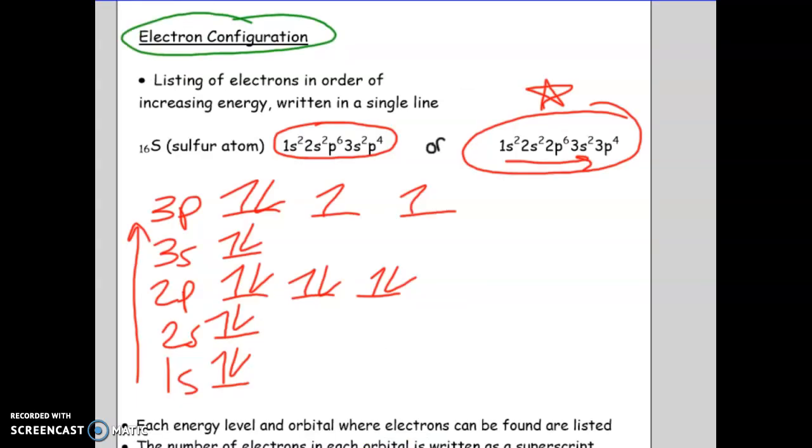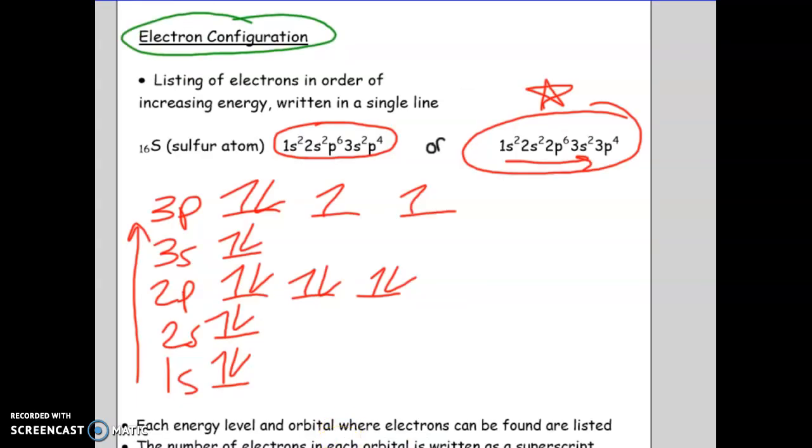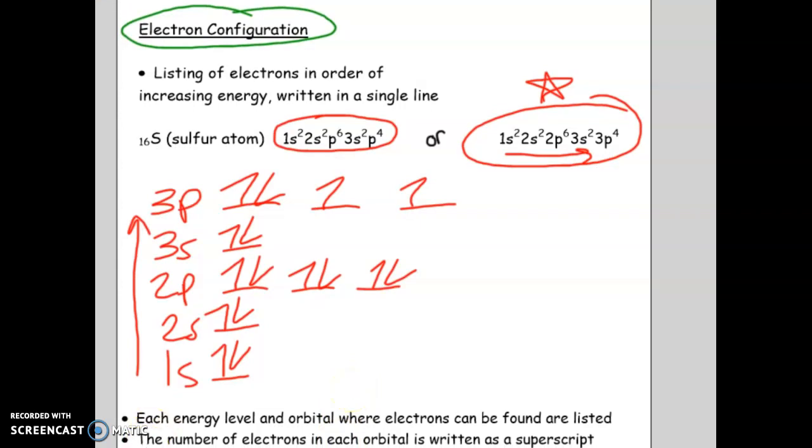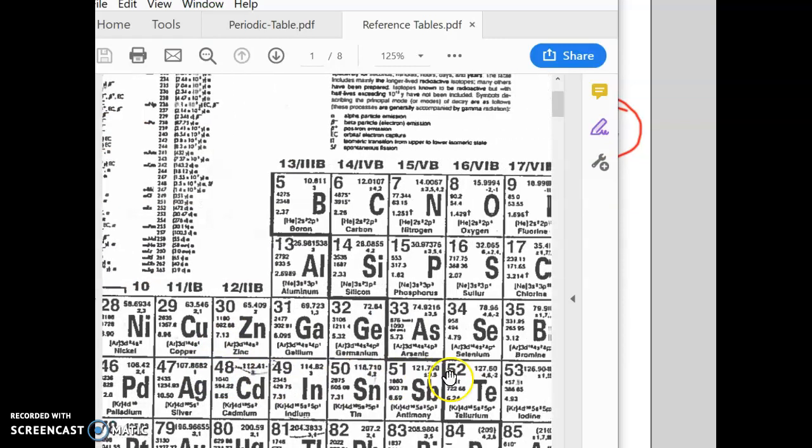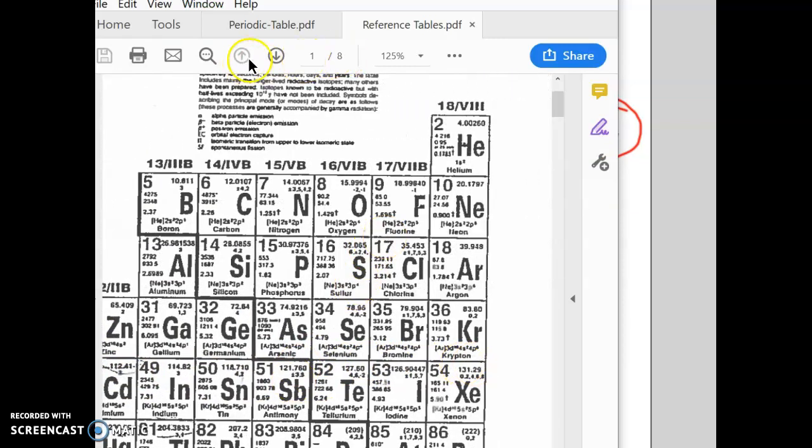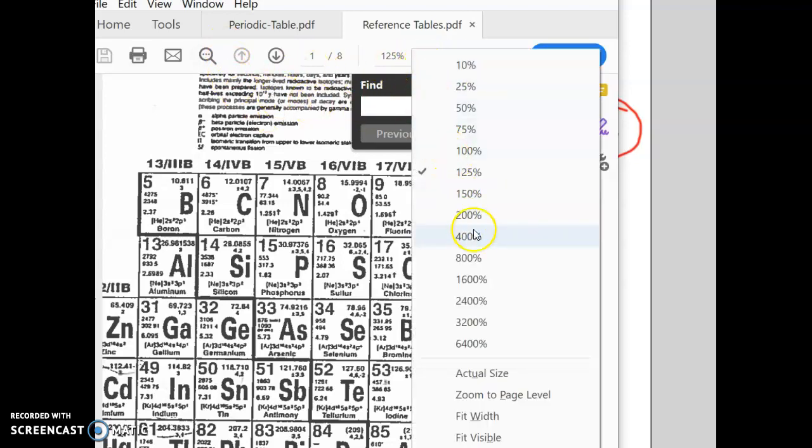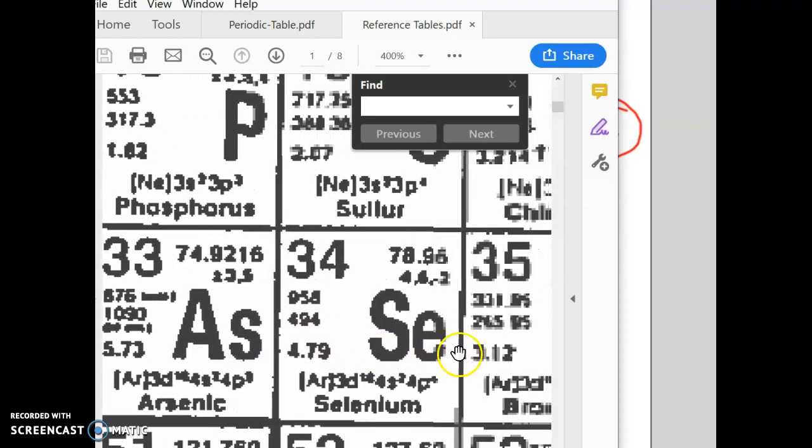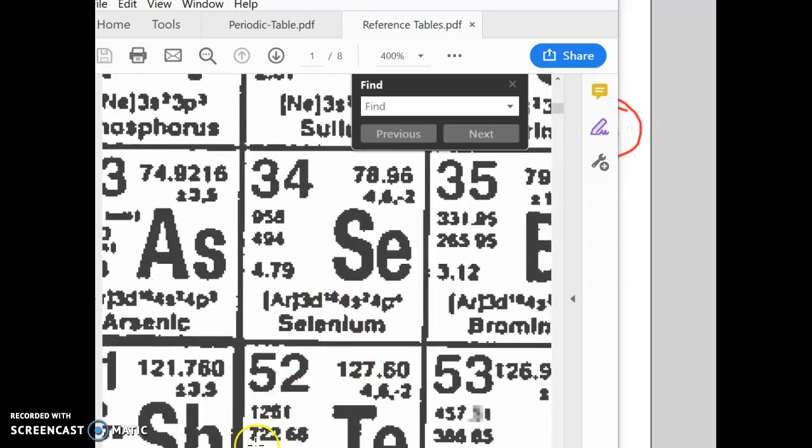Okay, before I get to that, there is something also known as the abbreviated electron configuration. Now what that looks at is actually, if you look at sulfur here on your periodic table that you have, let me zoom in a bit. It's a little bit too zoomed in. Okay, let me continue this in the next part without zooming in so much.